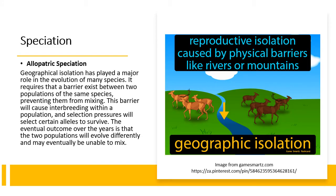So let's zoom in on speciation. There are two types of speciation that are key: allopatric speciation and sympatric speciation. Allopatric speciation refers to geographical isolation — geography can cause the separation of species, and by causing this separation, it causes the species to evolve differently into two different types of species.